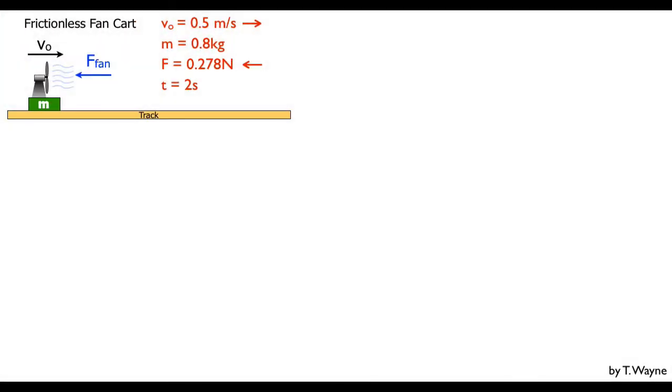So let's take a look at our setup. I've got a track that's going to be frictionless, and I've got this fan cart. It's pushed to the right, and it's going to have a fan turned on that's going to apply a force pushing it to the left. I've got initial velocity, I've got a mass, and I know the force of the fan, and it's going to happen for two seconds. So somehow I want to model this.